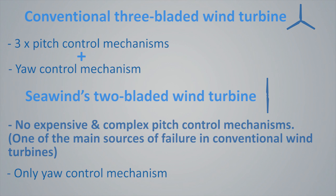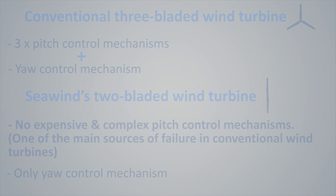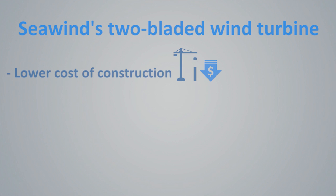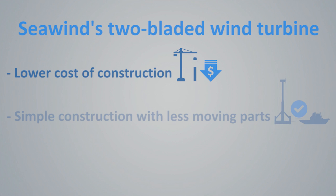Eliminating the blade pitch mechanisms is one of the main reasons why the Seawind 6 can produce energy at a significantly lower cost than conventional wind turbines.